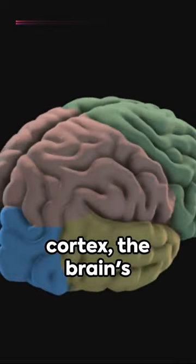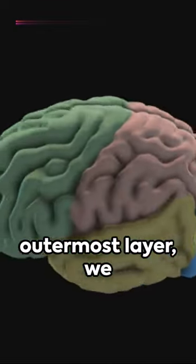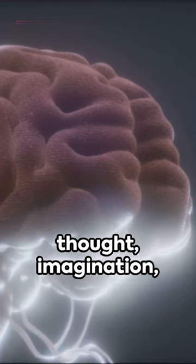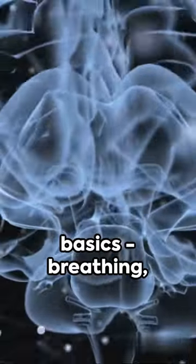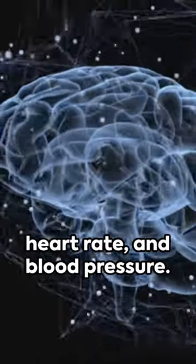In the cerebral cortex, the brain's outermost layer, we find the seat of thought, imagination, and decision-making. Meanwhile, the brainstem handles the basics: breathing, heart rate, and blood pressure.